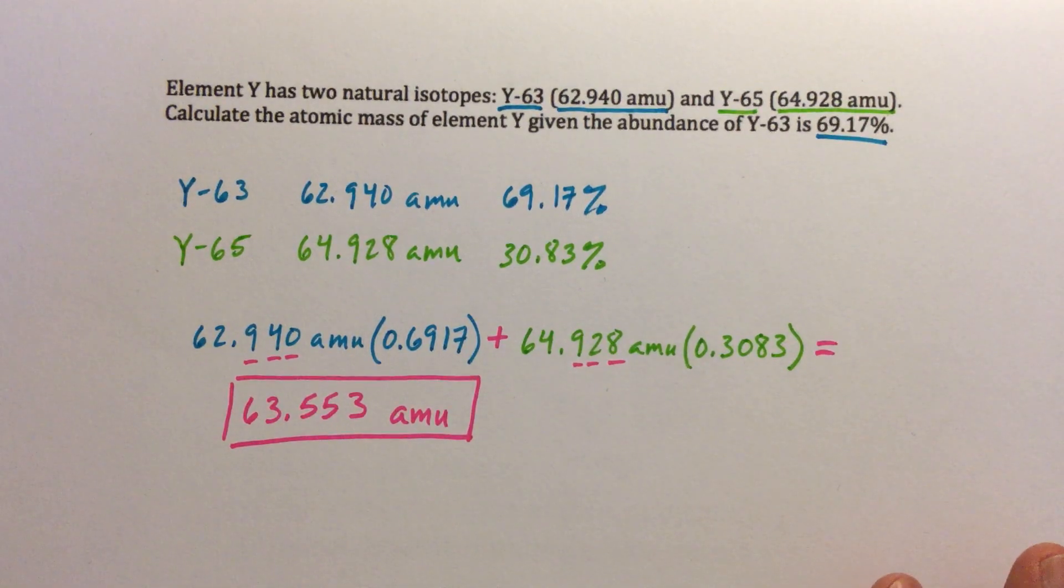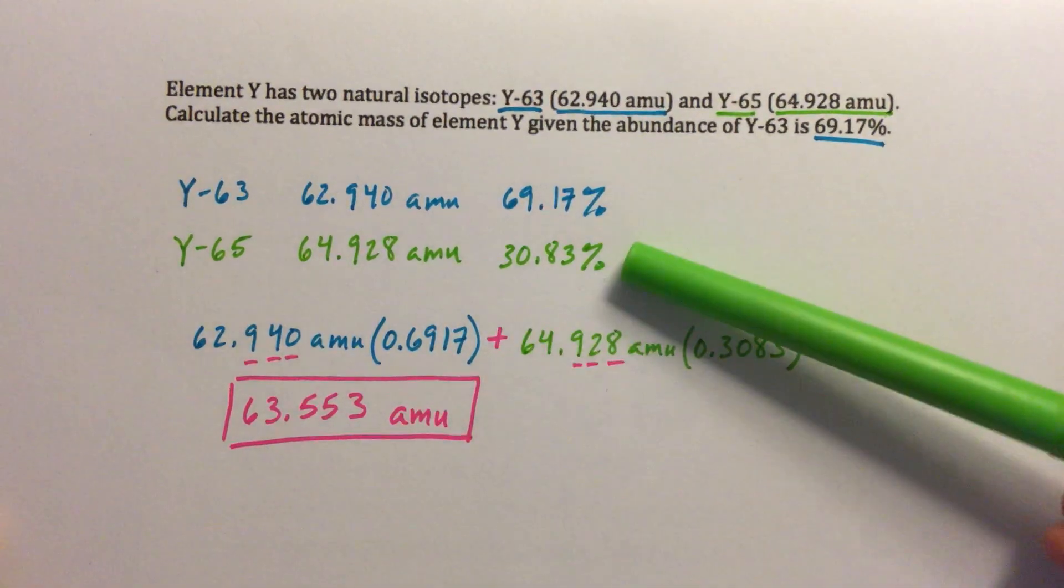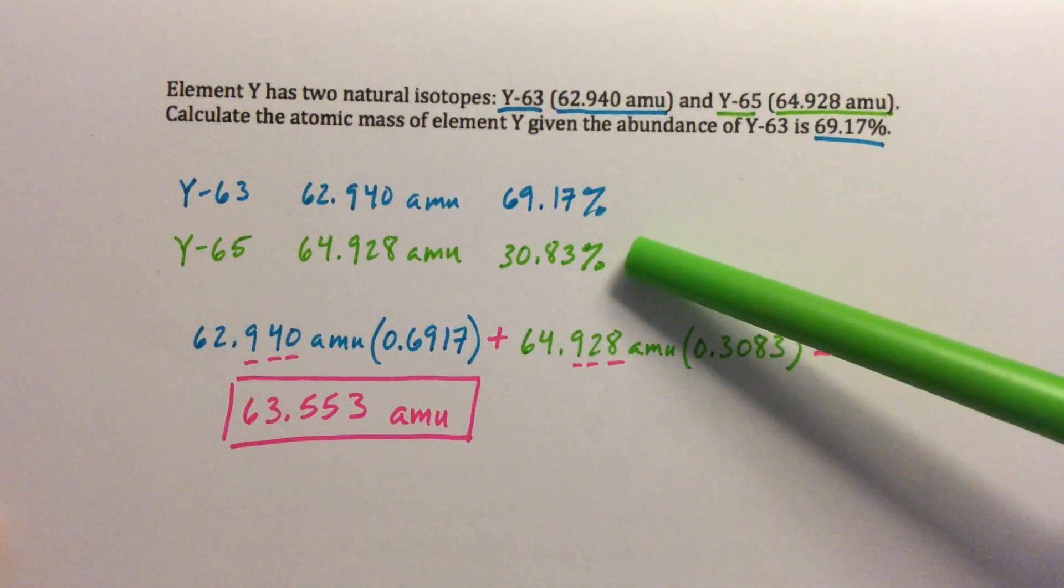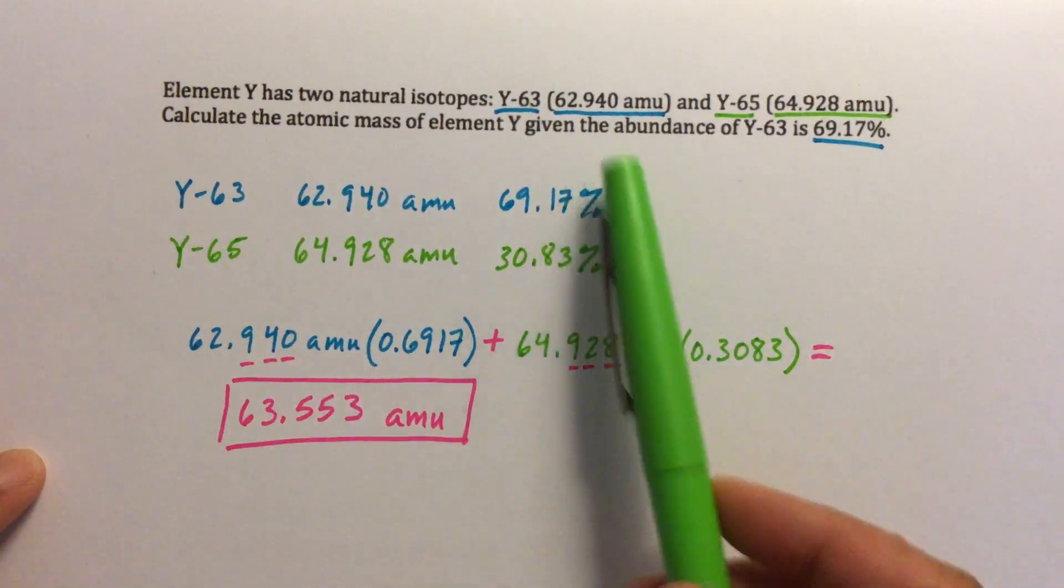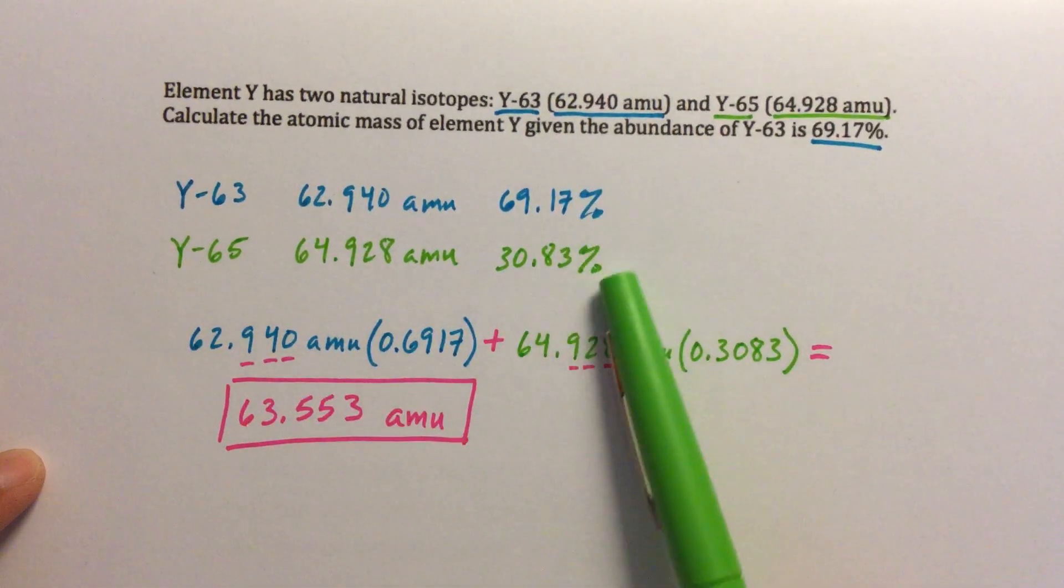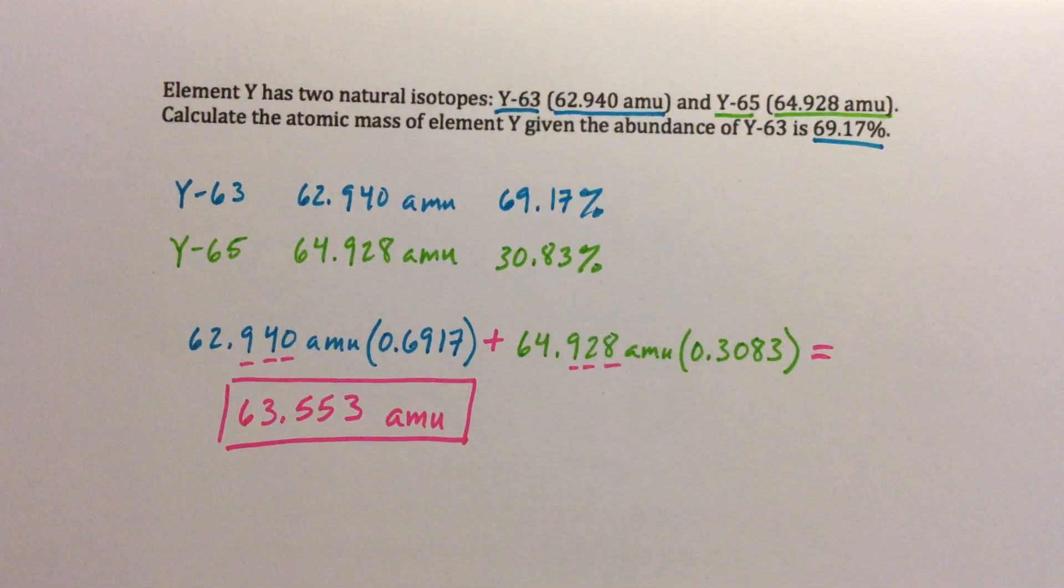So once you get that initial tricky part out of the way, determining this missing percentage, then it's a pretty straightforward atomic mass calculation. So just remember, you could even do this, even if it gave you three different isotopes, because you could just use the idea that they should all add up to 100 to figure out the missing percentages. Alright, good luck with that.